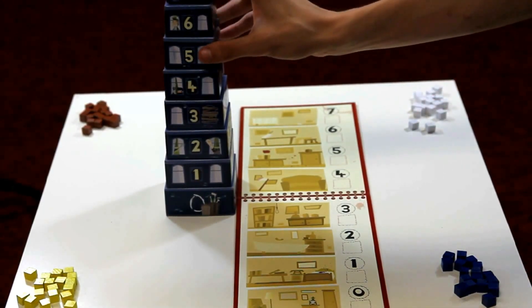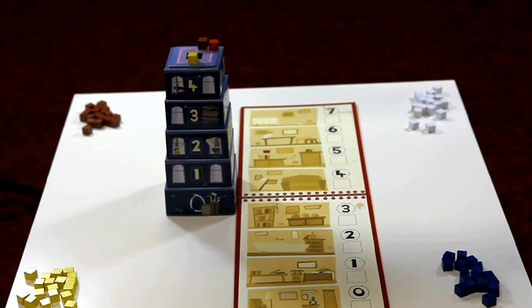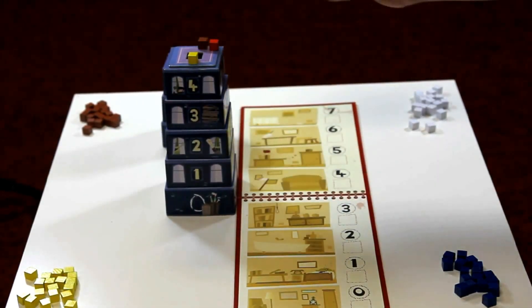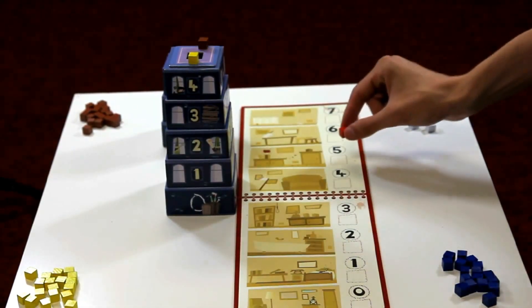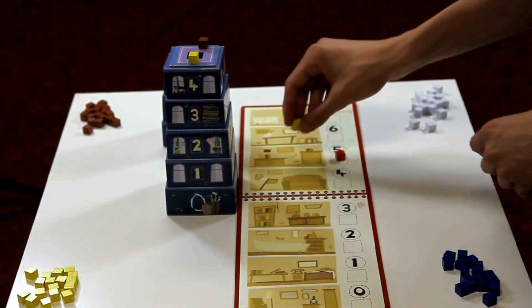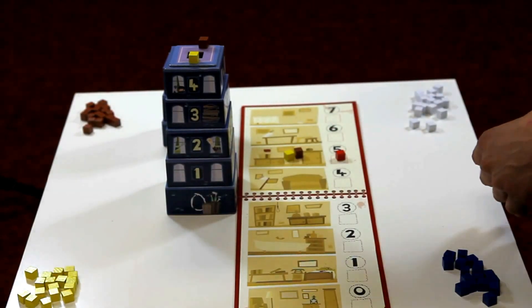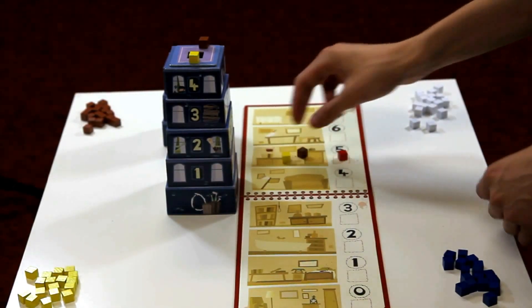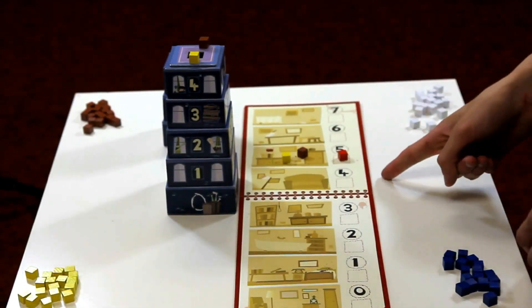The blue player makes his guess. He thinks there was a murder on the fifth floor. When the first body is found, place it on the matching floor. The players who were also found on the same floor as the body now have to place a clue from their supply onto the investigation sheet.